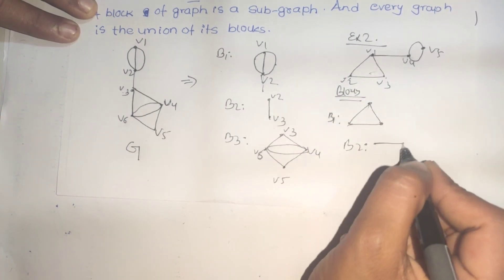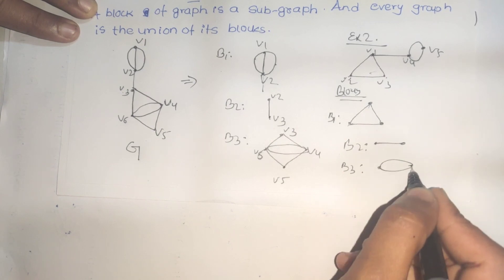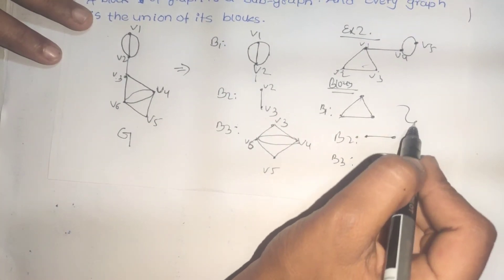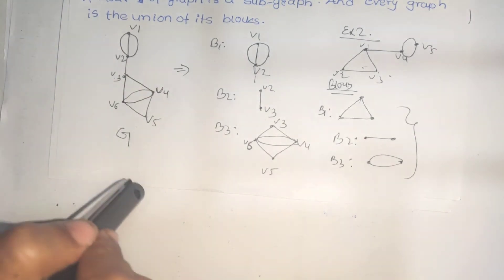The union of all these blocks forms the given graph. So blocks of a graph are subgraphs which don't contain any cut point.